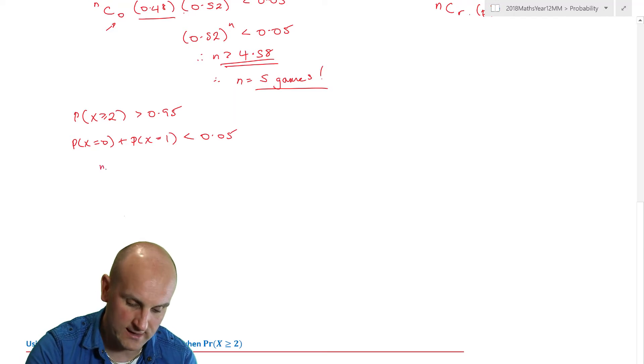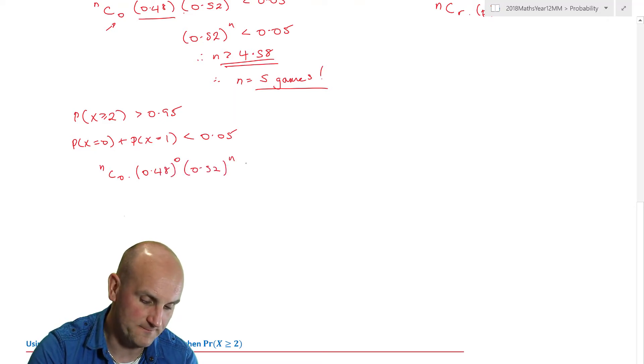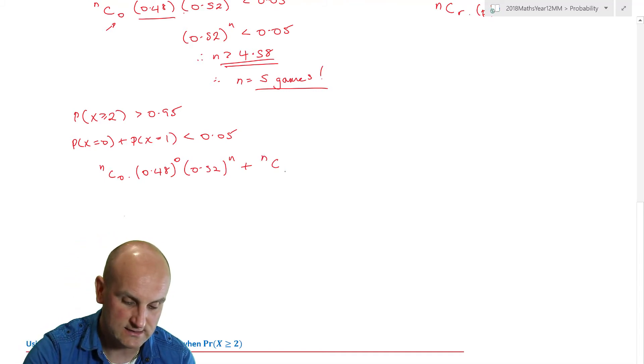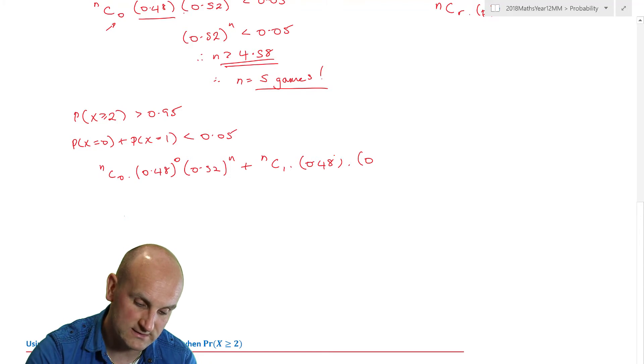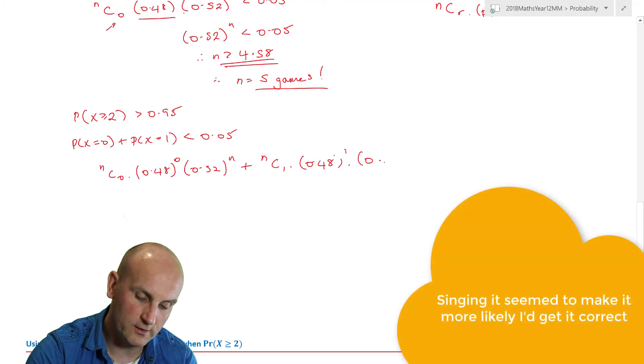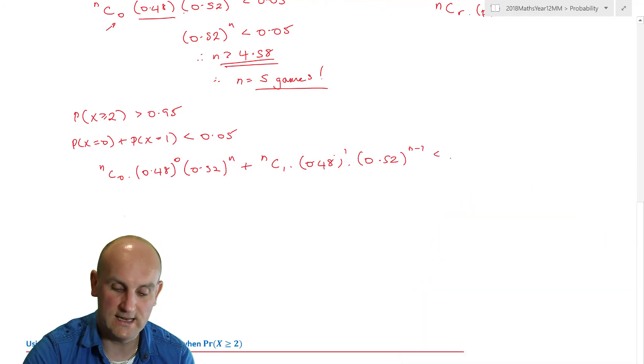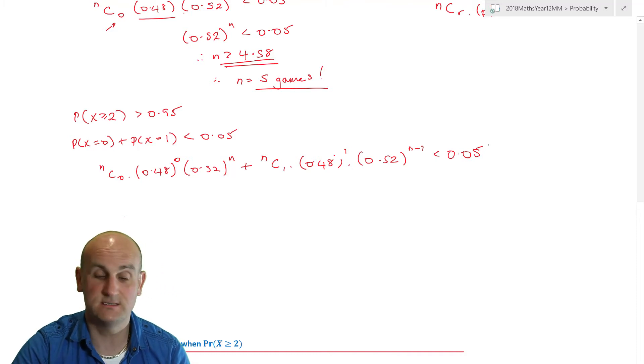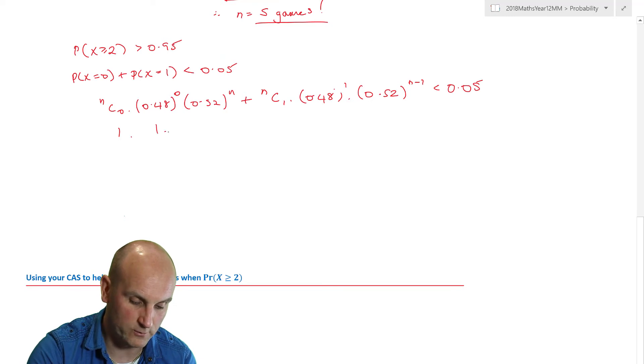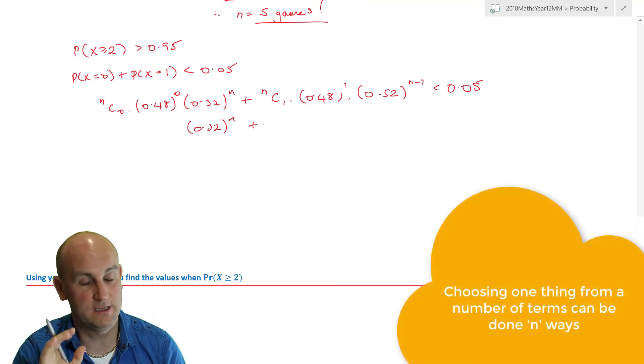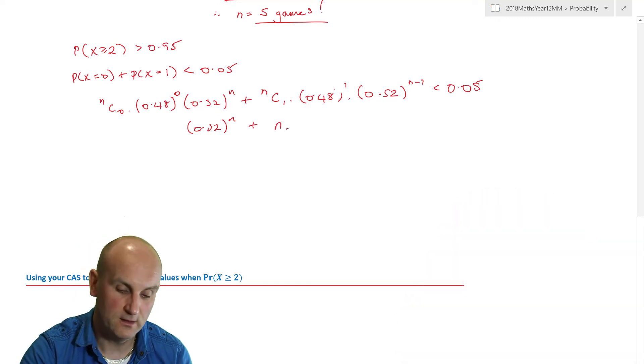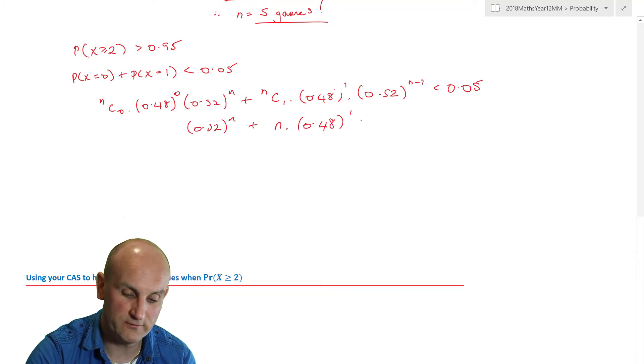And I'm just going to use my combination stuff once again. So NCR - we don't know what N is. N choose 0 times the probability of success which is 0.48 to the power of zero times 0.52 to the power of N plus N choose 1 times 0.48 to the power of 1 times 0.52 to the power of N minus 1 has got to be less than 0.05. Right, simplifying this because I'm still going to use my calculator. I know that that is 1, I know that is 1, and that is still 0.52 to the power of N. Now plus, I know that N choose 1 because of Pascal's triangle works out to be the value of N. This becomes 0.48 to the power of 1 which is just 0.48, and this becomes 0.52 to the power of N minus 1 is less than 0.05.